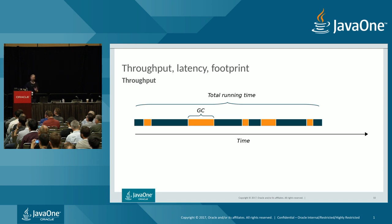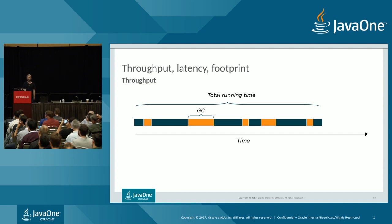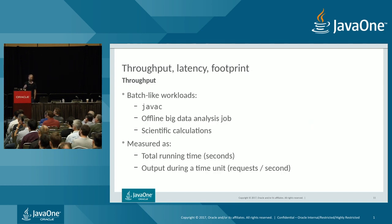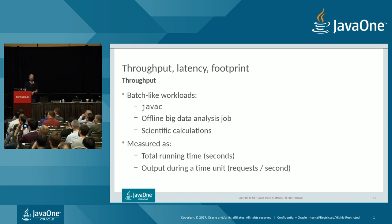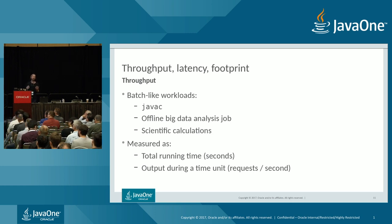GCs can do different optimizations during a pause and while your program is running, so different collectors can result in shorter or longer total running time for the same workload. Throughput matters most for batch-type workloads — for example, when compiling Java source code with javac, you don't care how long the JVM is paused; you just want it to finish as quickly as possible. This also applies to offline big data jobs or scientific computation where you just want the result back.